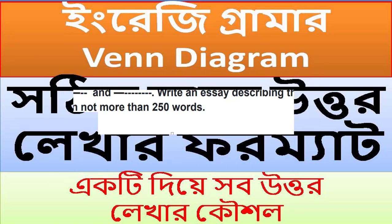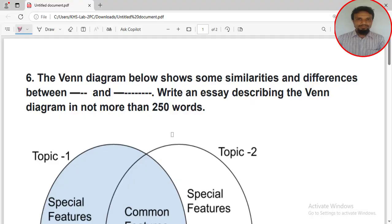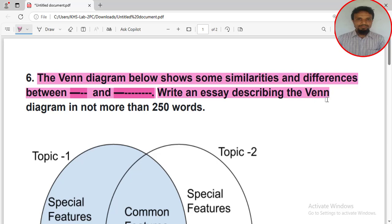You can see the question: the Venn diagram below shows some similarities and differences between two topics. This is topic 1 and this is topic 2. We have to write an essay describing the Venn diagram in not more than 250 words.